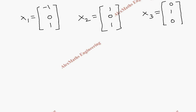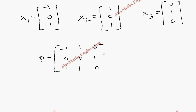Using these three eigenvectors we construct the modal matrix P: first column (minus 1, 0, 1), second column (1, 0, 1), third column (0, 1, 0). For each column we find the square root of the sum of squares to normalize. Column 1: root(1 + 0 + 1) = root 2. Column 2: root(1 + 0 + 1) = root 2. Column 3: root(0 + 1 + 0) = 1.